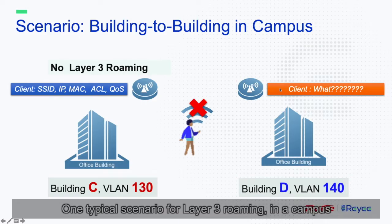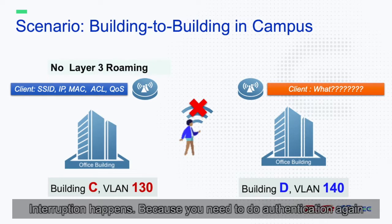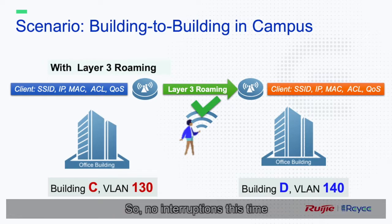One typical scenario for layer 3 roaming is in a campus. If you walk from one building to another, you will switch from VLAN 130 to VLAN 140. Interruptions happen because you need to authenticate again. Layer 3 roaming can help you copy the policies from one AP to another, so no interruptions this time.